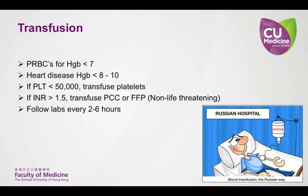For patients with severe acute blood loss, transfusion should be considered. Most guidelines recommend transfusing for a hemoglobin level of less than seven; however, the threshold may be higher in patients with cardiac concerns or history. If the patient has thrombocytopenia, platelets can be transfused, and if the patient has been on warfarin with an elevated INR, FFP or PCC can be transfused. Labs including platelets, hemoglobin, and INR should be routinely checked at least every six hours depending on the patient's clinical stability.